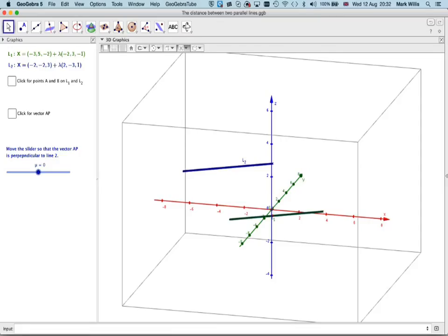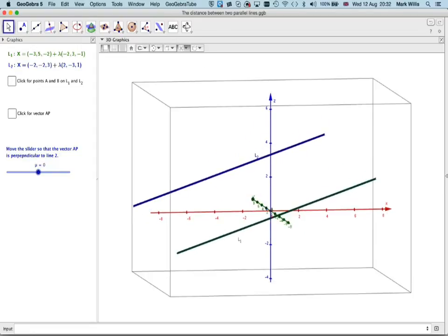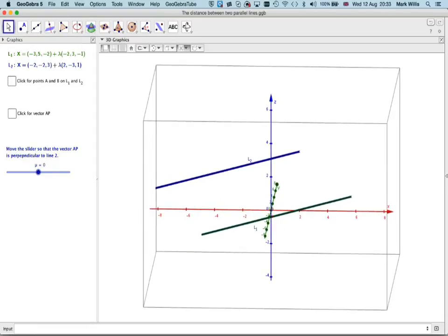Now if we go to our GeoGebra app, we can see here I have the two lines. This is line 1 and this is line 2. We can very easily see, and later we'll look at it in 3D as well, that they are actually parallel. These are the coordinates given in the question.